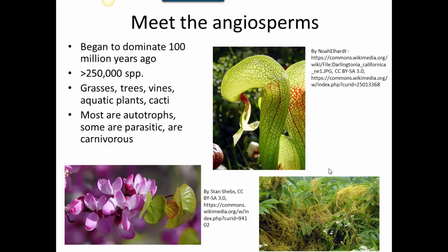Angiosperms are certainly the most diverse group of plants, and they are also diverse in terms of their form. This phylum includes herbaceous plants like grasses, flowering woody plants such as maples and basswoods, vining plants, aquatic plants like water lilies, and plants highly adapted to survive in dry environments such as cacti.